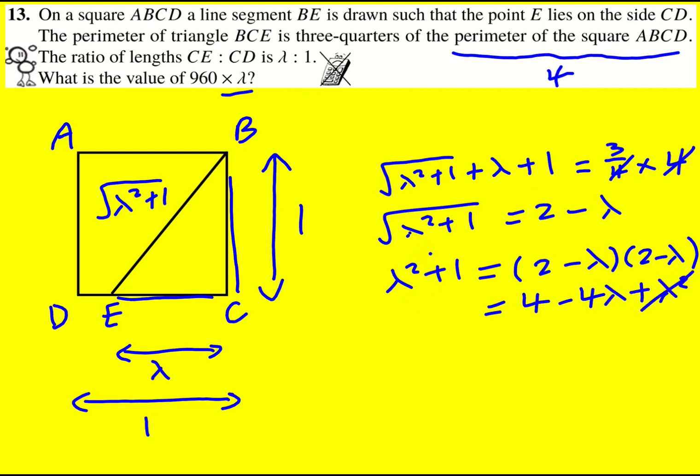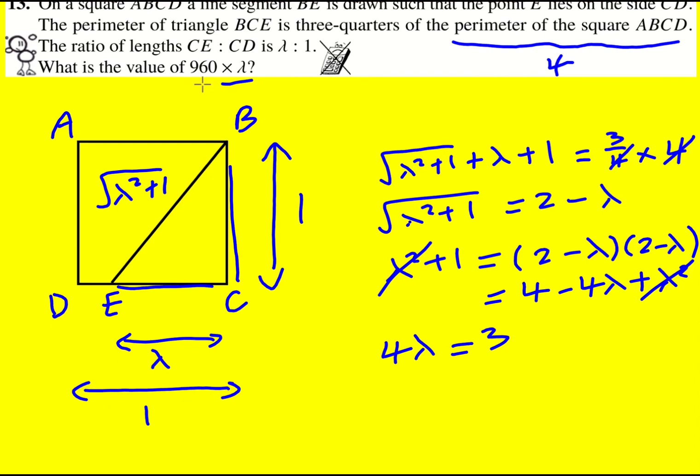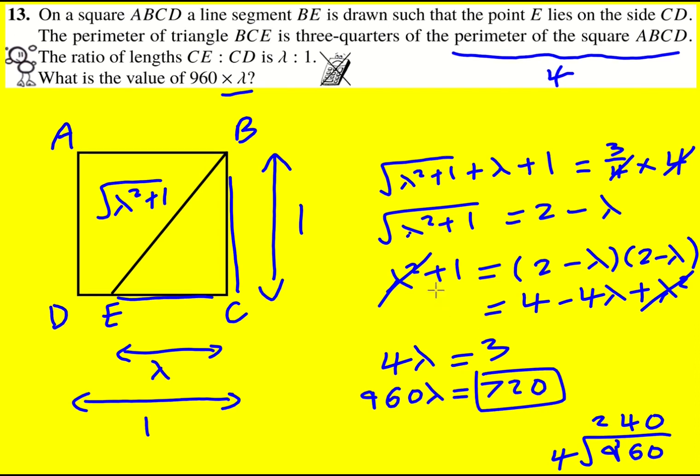I can just rearrange it to give four lambda equals three. And I could work out what lambda is going to be three over four but I'm actually interested in 960 lambda. So I need to think what do I times four by to give 960. I can do fours into 960, two-forty. So 960 lambda is going to be three times 240 which is going to be 720. Neat question.